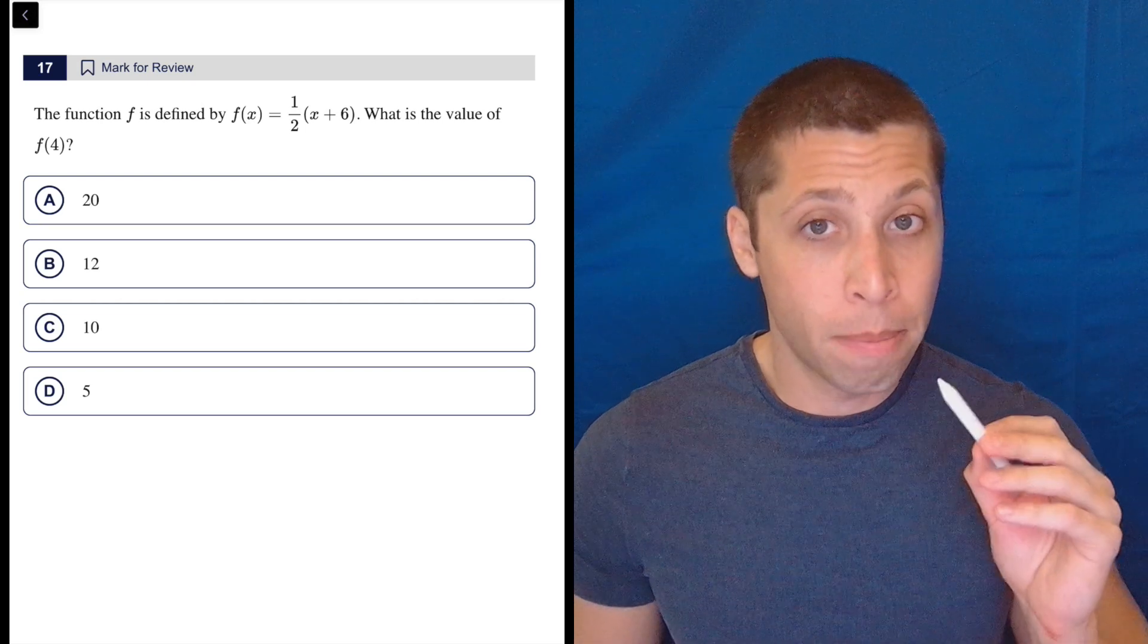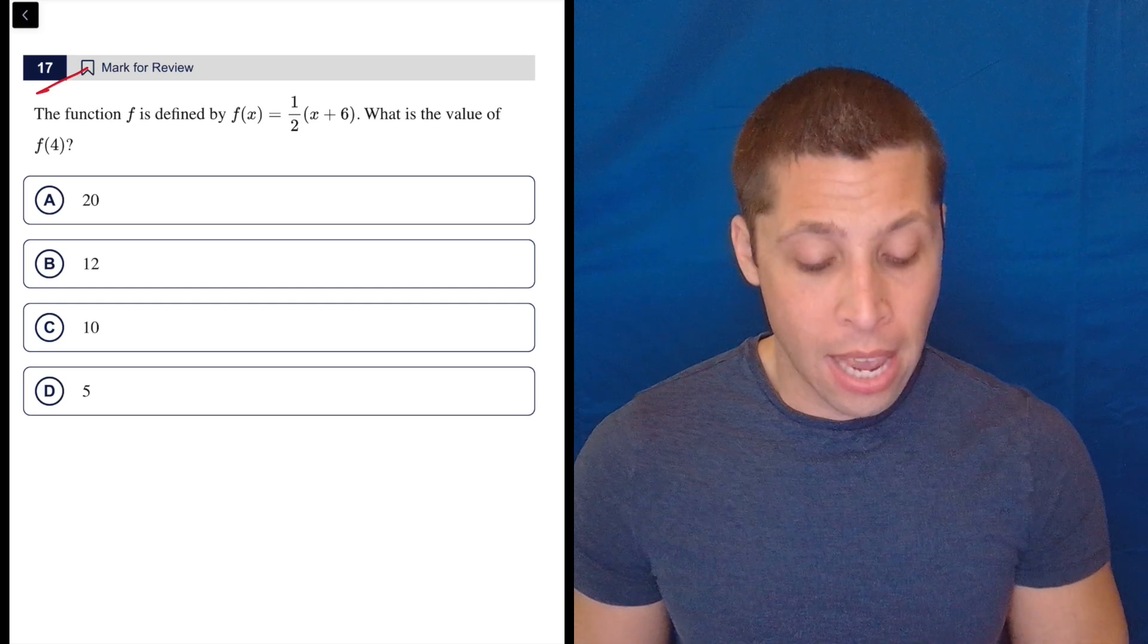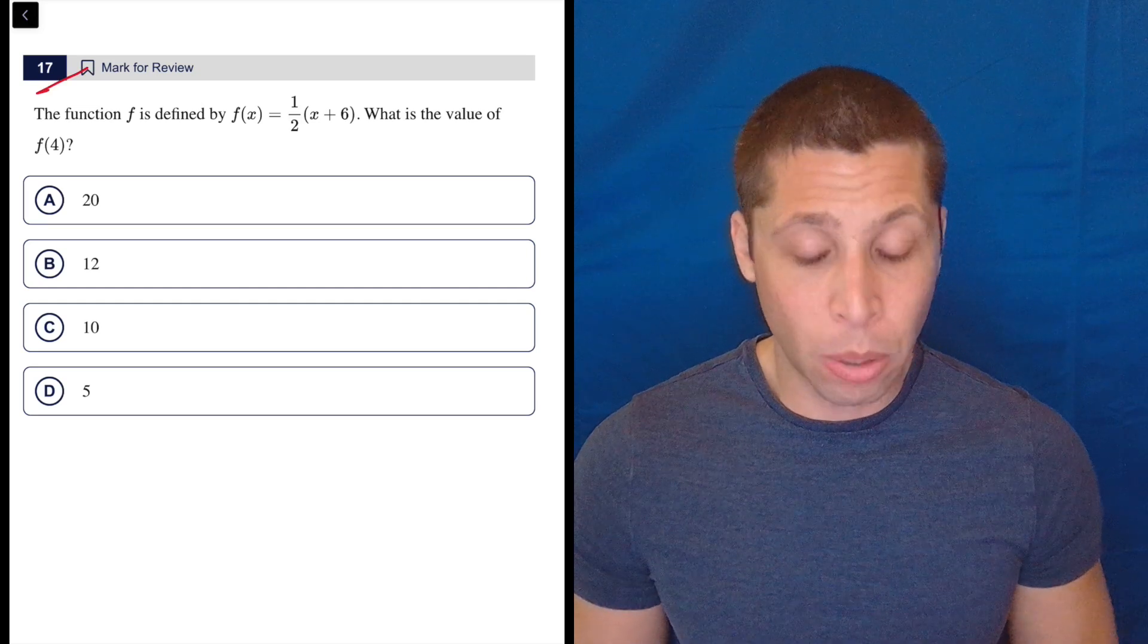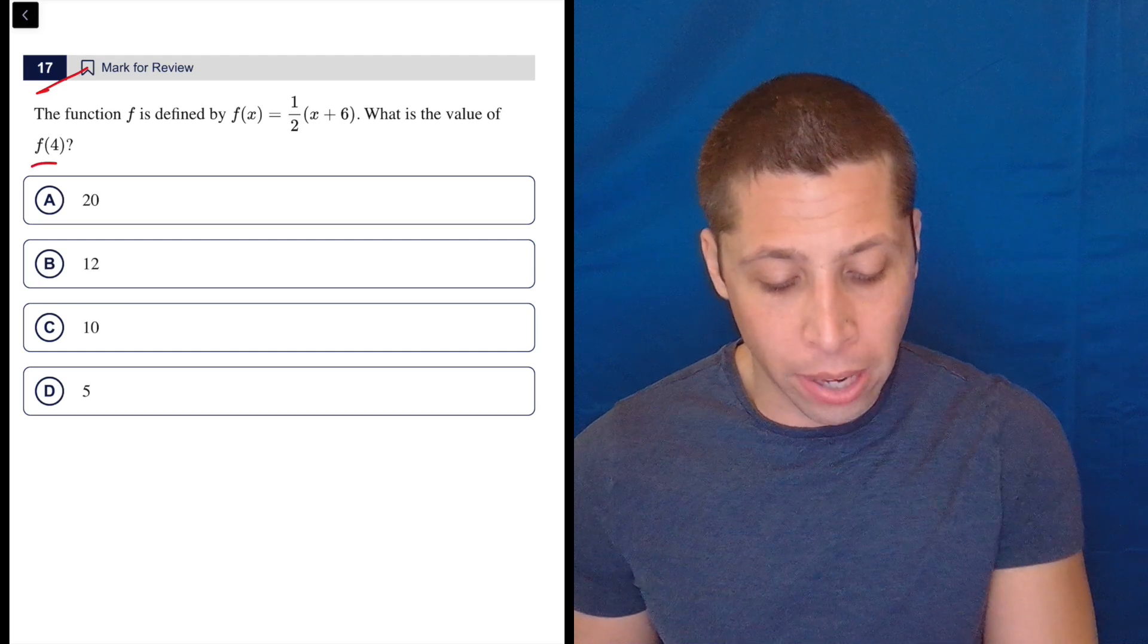But for a hard module question to be number 17 and to be this easy, that's really weird. Because look at all we have to do. This is basic function notation. F of 4 means you put in 4 for x.